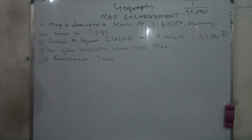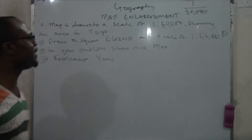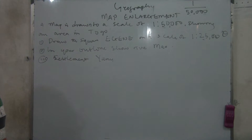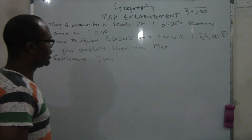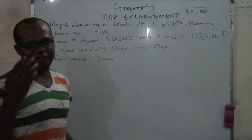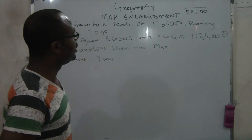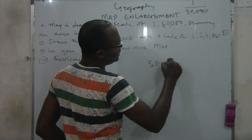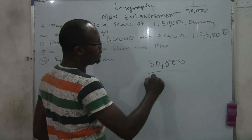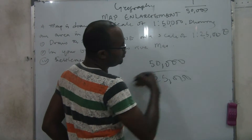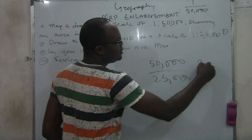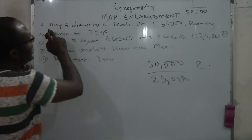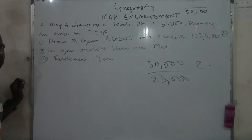So now, how do we find the factor of the enlargement? Just take the bigger one — which is 50,000 — divided by the smaller one, which is 25,000. The answer is 2. So you are enlarging by a factor of 2.